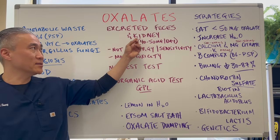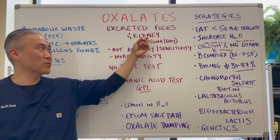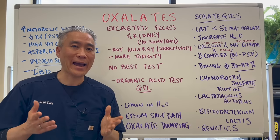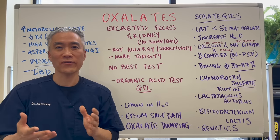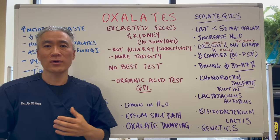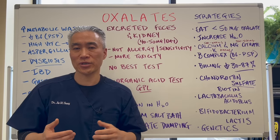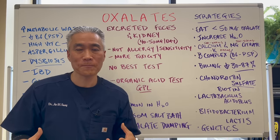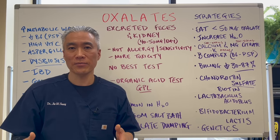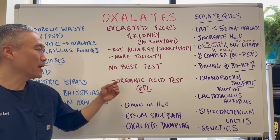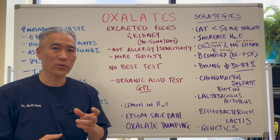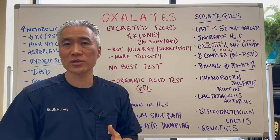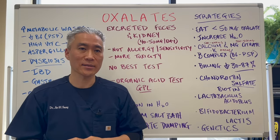Oxalates are excreted through the feces as well as the kidney — about 40 to 50 milligrams per day is processed through the kidney. Oxalate issues are really not an allergy or a sensitivity to oxalates; it's more of a toxicity. Now, to test for oxalates, there's no real good methodology. You can check in the urine and the blood. However, studies show people can have oxalates in their kidney without really excreting them in their urine, because it's all getting embedded into the kidney. So there's no real best test. However, if you want to try testing for it, there's something called an organic acid test — I use a company called Great Plains Lab — and it can give you clues to oxalate levels in our body.